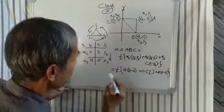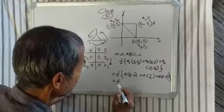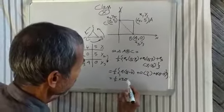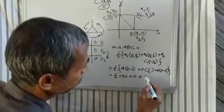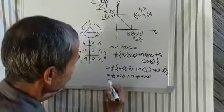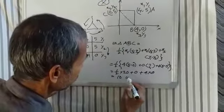y1 minus y2 equals 5 minus 5, which is 0. So we get: half into 20, plus 0, plus 4 into 0. This equals 10 units.